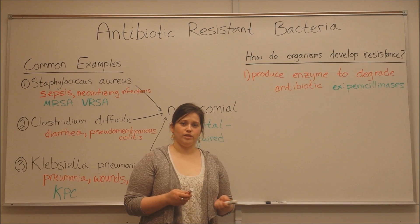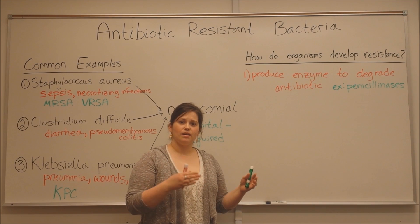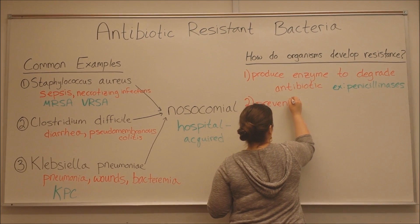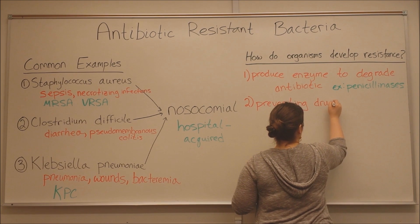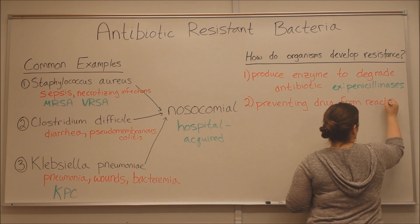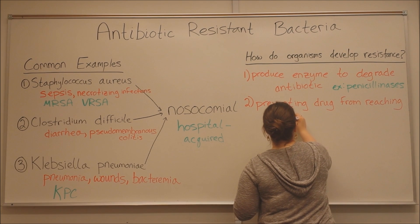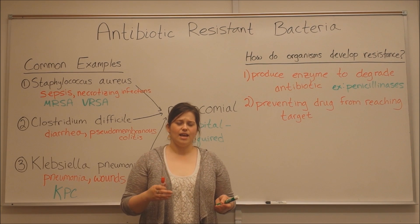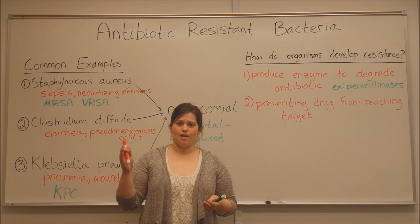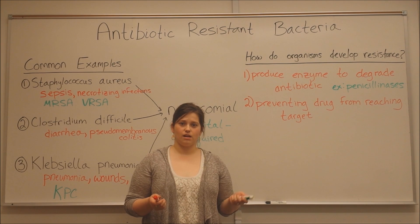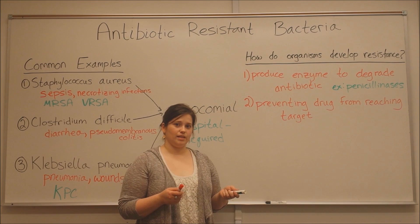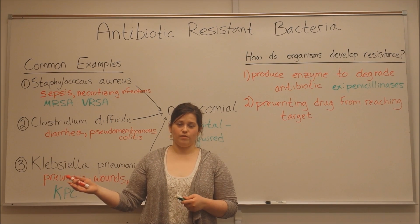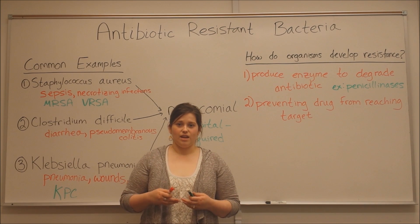Another way that these organisms can develop resistance is by keeping the drug from reaching its target. For example, there is an antibiotic called tetracycline. It works by binding to the bacterial ribosome and keeping the ribosome from synthesizing proteins that the bacteria needs to survive. There are some bacteria that are resistant to tetracycline because they're able to modify it in such a way that it does not ever reach the ribosome. If it can't get through the cytoplasm of the cell to the ribosome, it can't exert its effects. Thus, those bacteria are resistant to tetracycline.